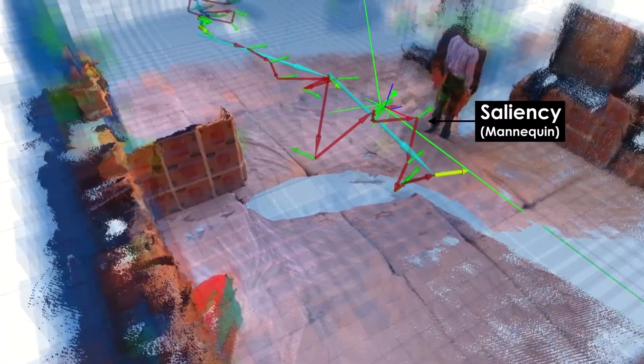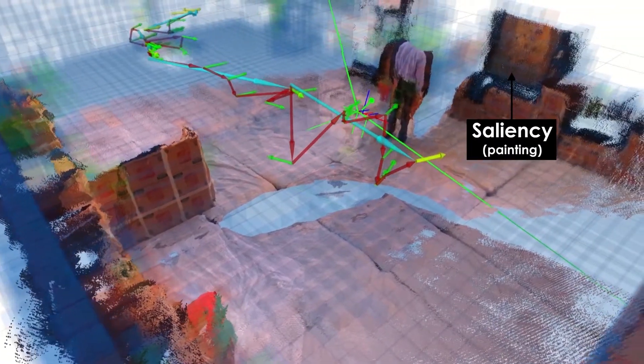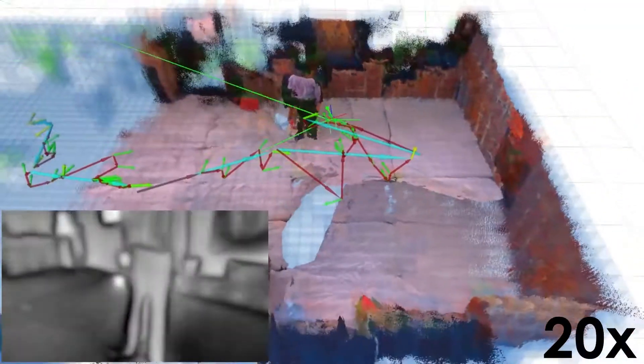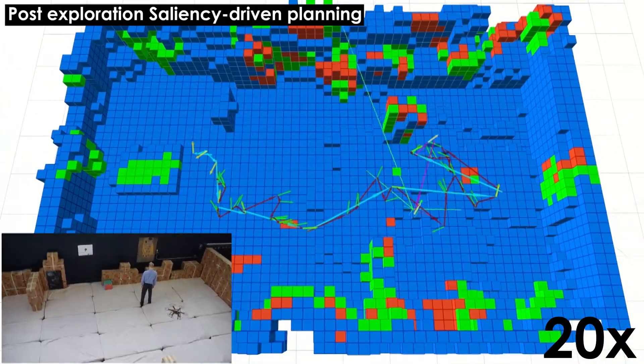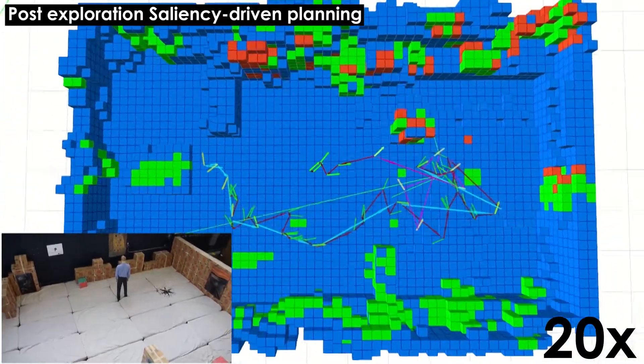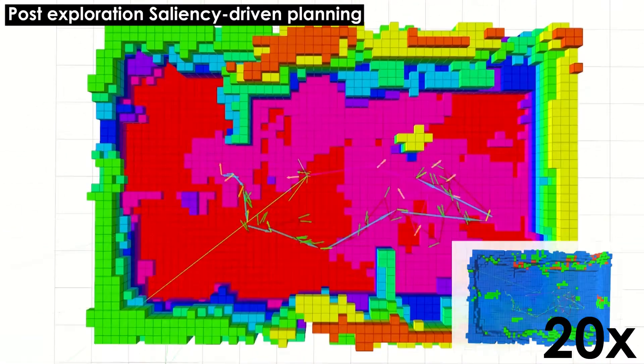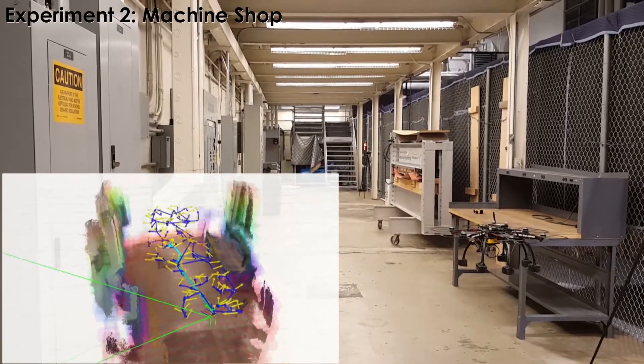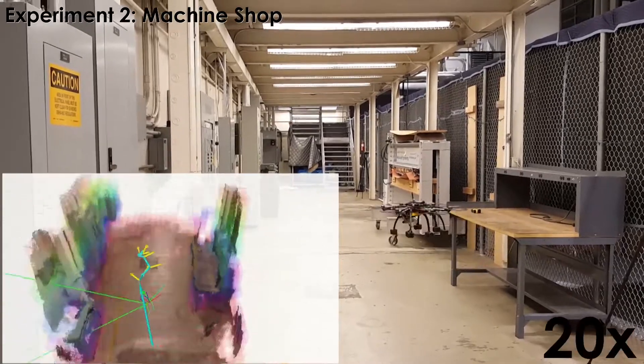the algorithm first samples a random tree and identifies the branch that maximizes the expected exploration gain. The first viewpoint of this path is selected, but the path towards it is selected through a second planning step that optimizes the re-observation of salient regions at sufficient resolutions.